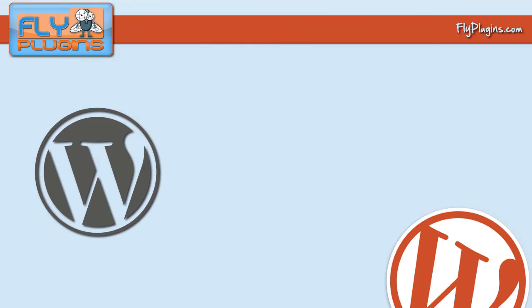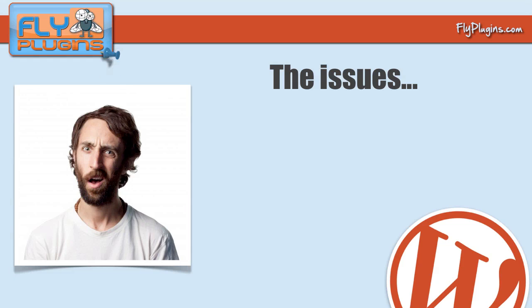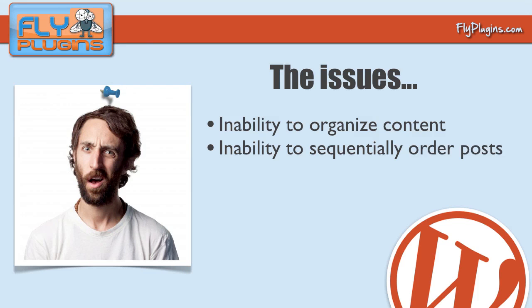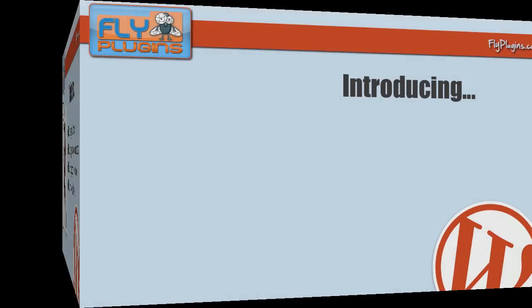WordPress is the simplest yet probably the most robust content management system, and it's no wonder why it is the chosen platform for many types of websites, including online e-course websites. There's only one problem: WordPress was initially created for bloggers. The issues we ran into were the inability to organize content, sequentially order posts, add good navigation, and track students. We searched high and low but couldn't find a solution, and after putting countless hours into organizing content in WordPress, we still didn't get the results we desired.